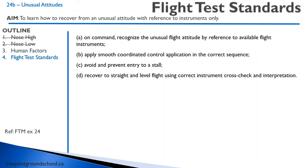For your flight test, your examiner is going to give you an unusual attitude and you'll be expected to recover. You want to do that in smooth, coordinated movements, avoid a stall, and return to straight and level flight using your instruments. That concludes this PGI on unusual attitudes. Thanks for joining me. The next two lessons are for commercial students only — if you want to watch them as a private pilot, by all means, but you won't be tested on them and they're not part of the syllabus.